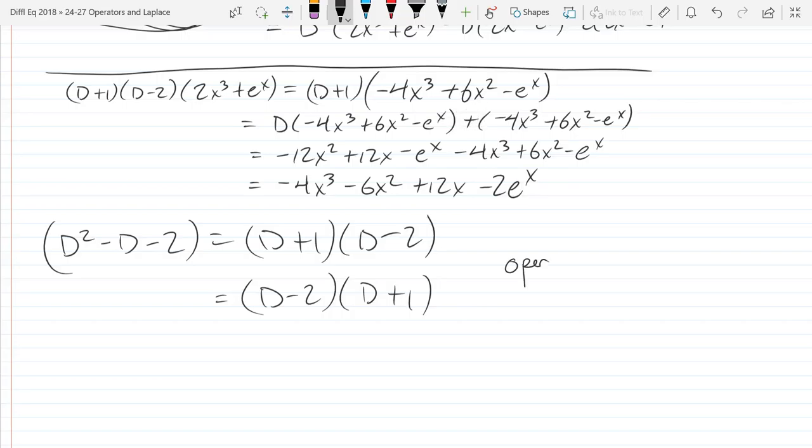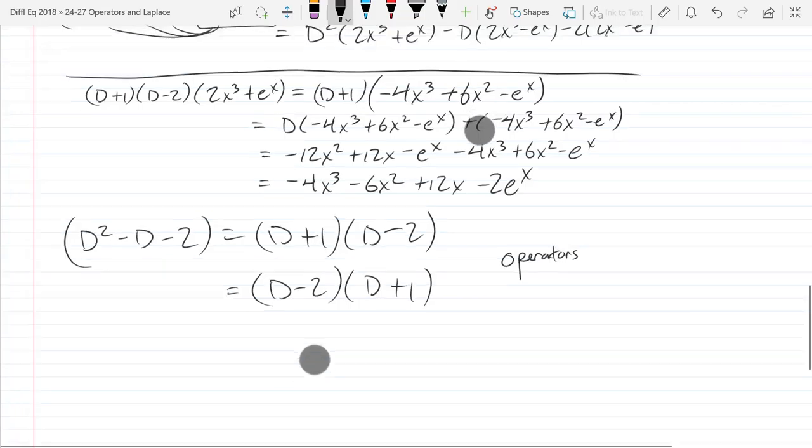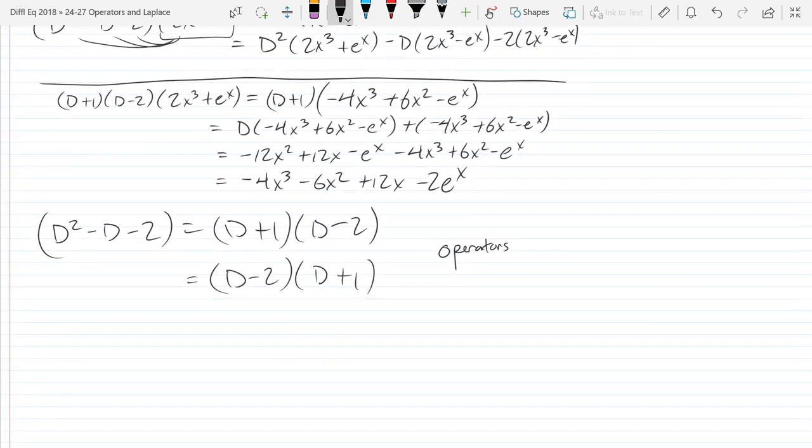Are there some that are not? Sure, but not ones that we're going to use. I'm just going to write operators are commutative. What I mean is our operator that we just defined is commutative, this polynomial operator. Sounds like it's time to go.